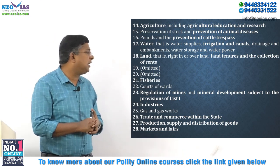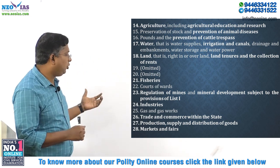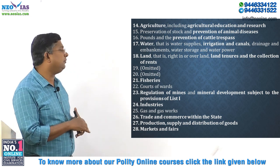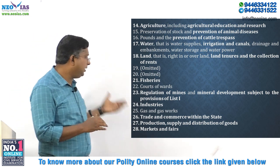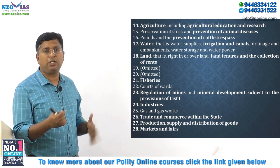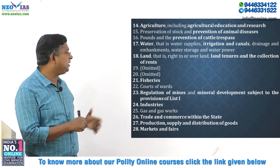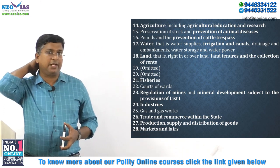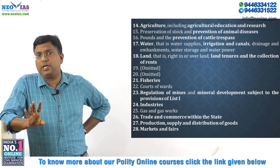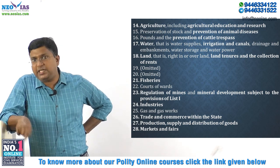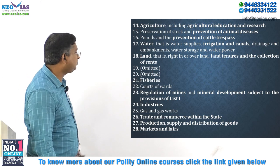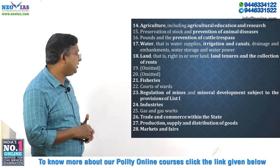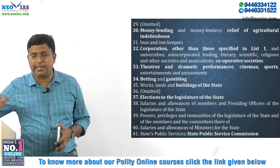Regulation of mines and mineral development, subject to the Union List, comes under the State List. Industries of national importance are under the Union List; other industries, gas and gas works, come under the State List. Trade and commerce within the state is under the State List, while interstate trade and commerce is under the Union List. Production, supply and distribution of goods come under the State List. Markets and fairs also come under the State List.